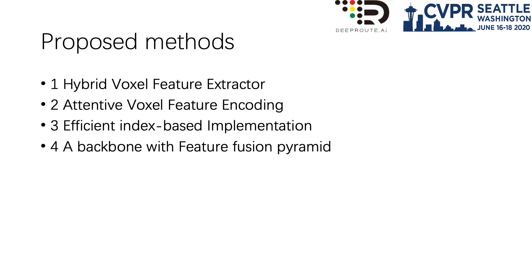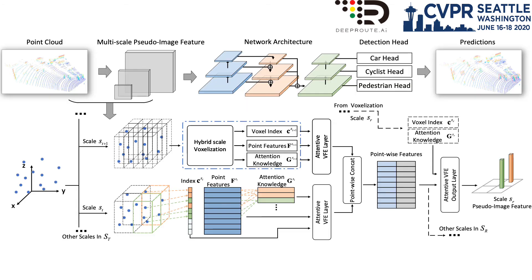We propose our method HVNet. Here is the network architecture: we quantize the point cloud into different scales of voxel and then apply the HVFE layer. We use an attention mechanism and dynamically project the features into arbitrary scales. All operations are based on our index-based implementation.